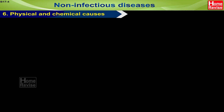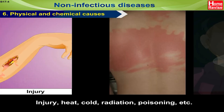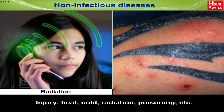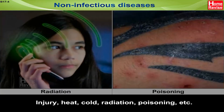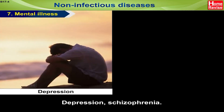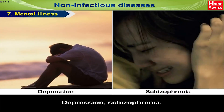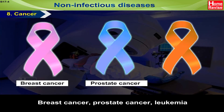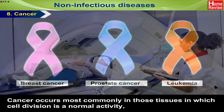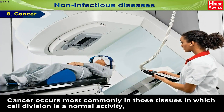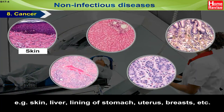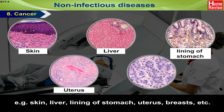Cataract. Number six — physical and chemical causes: injury, heat, cold, radiation, poisoning, etc. Next is mental illness: depression, schizophrenia. Cancer: breast cancer, prostate cancer, leukemia. Cancer occurs most commonly in those tissues in which cell division is a normal activity, for example skin, liver, lining of the stomach, uterus, breast, etc.